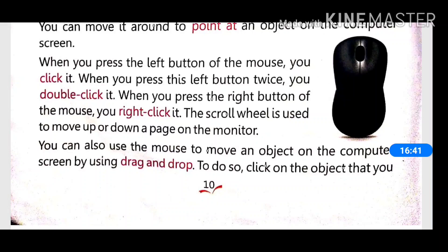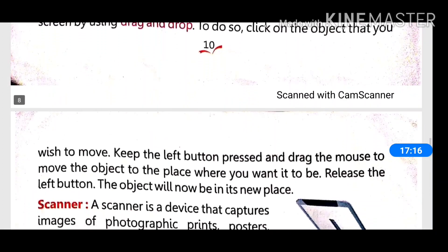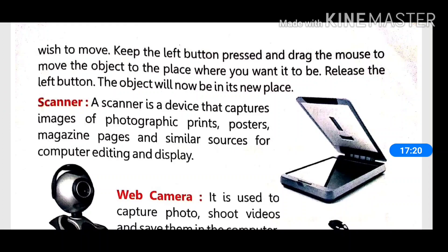You can also use the mouse to move an object on the computer screen by using drag and drop. When we want to move an object, we select the object by pressing and holding the left button, then drag it to the place where we want to move it, and when we release the left button at that place, it is called drop.